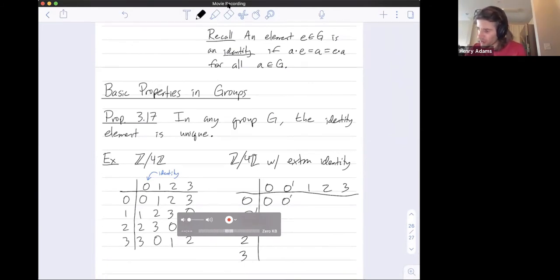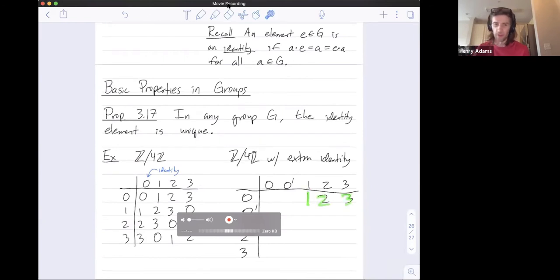0 is an identity, so I know this row has to be the same. 0 prime is the identity. So 0 is an identity, meaning 0 combined with 1, 2, and 3 gives me 1, 2, and 3. And same thing, 0 prime combined with 1, 2, and 3 has to give me 1, 2, and 3.